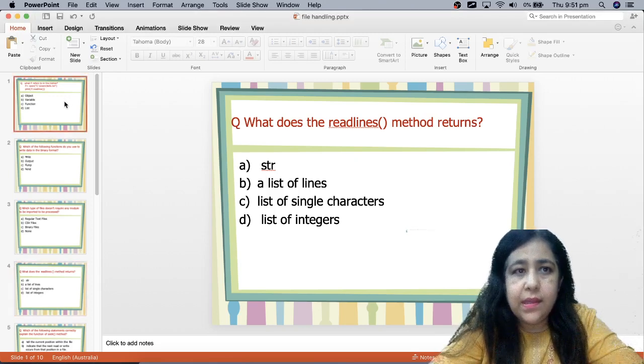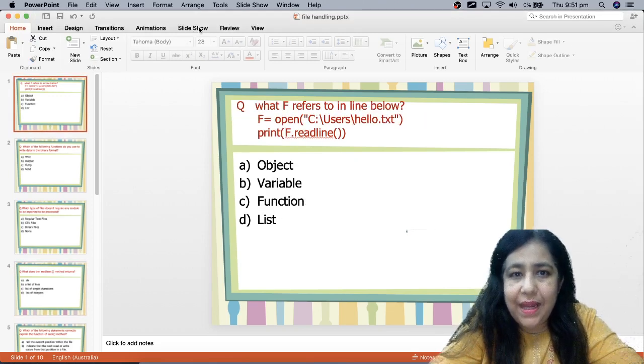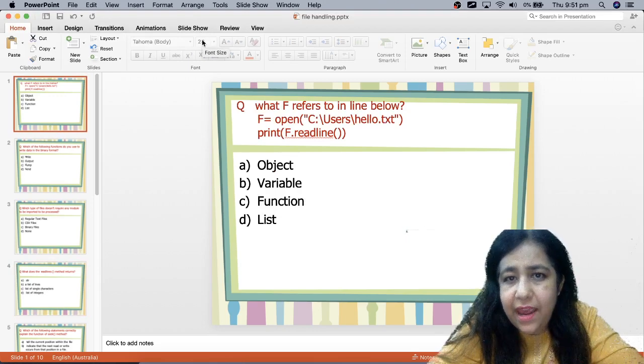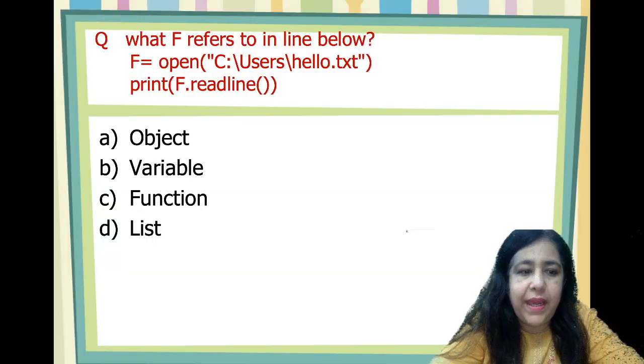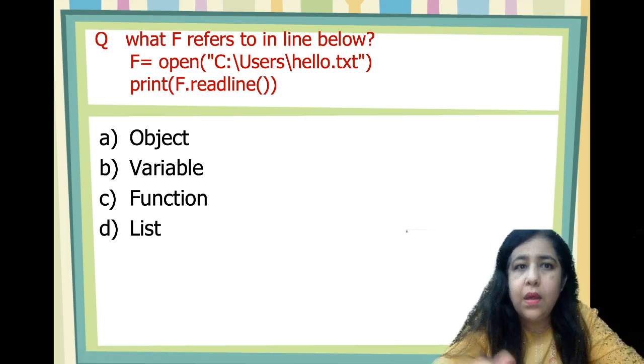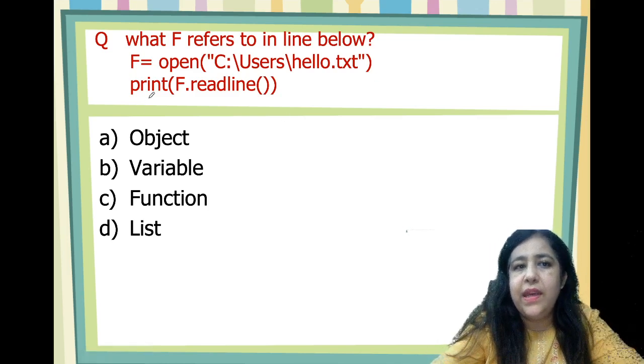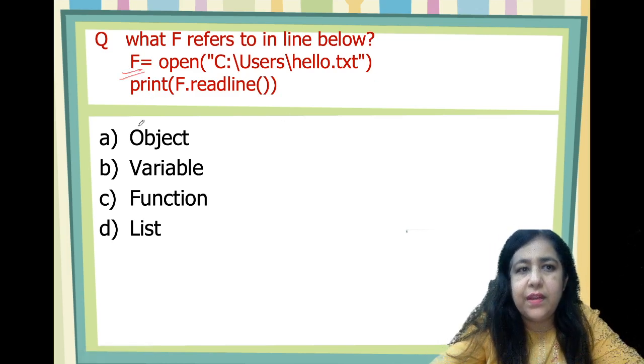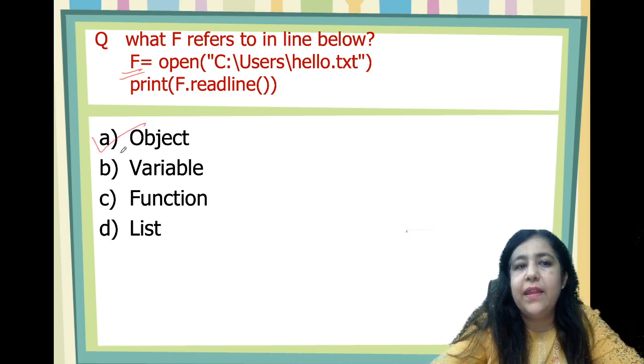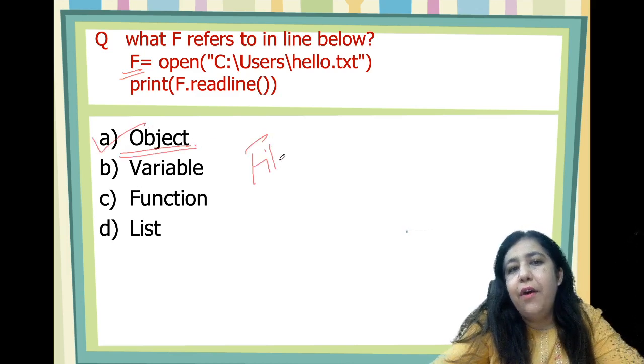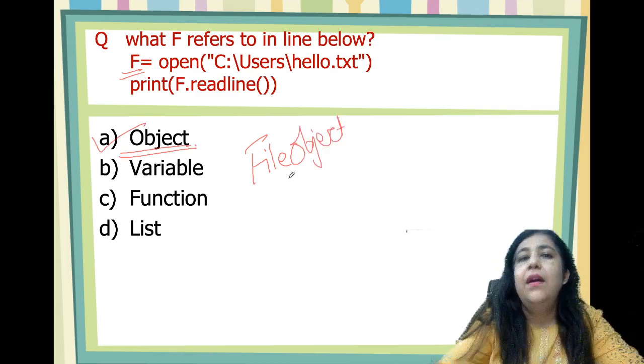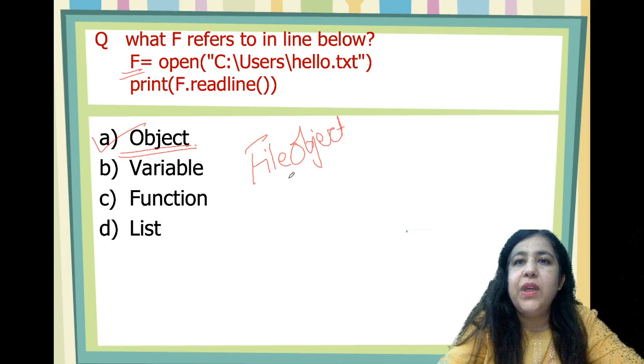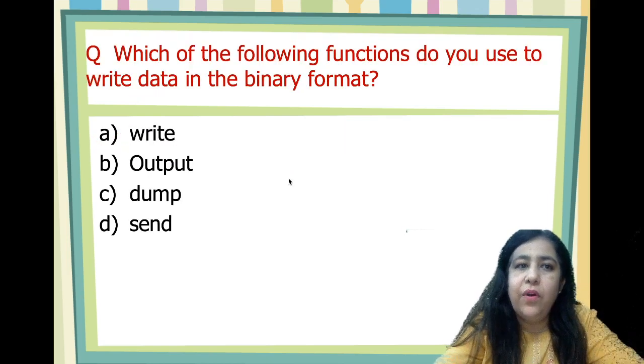Let's start with the questions. You have the first question here, it's saying, what F refers to in the line given below? You have the line written here, F is equal to open C users hello.txt and this. So, what do we use F? What do we call it? Object. This is called as File Object. File Object is the correct answer for this question.